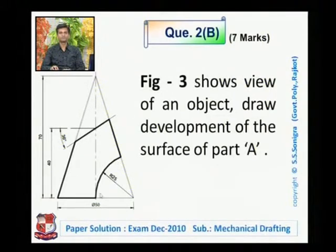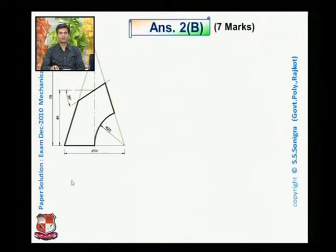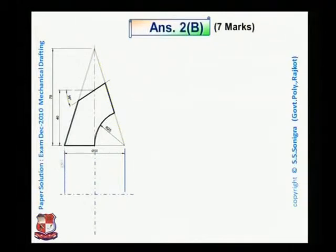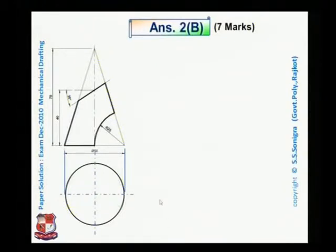To draw the development of the cone, we first have to draw its top view. For that, draw the axis from its front view — a vertical axis and horizontal axis. After drawing this axis, take projections from end points 1 and 2 and draw a circle of diameter 50 millimeters. So this is the top view of the given solid.